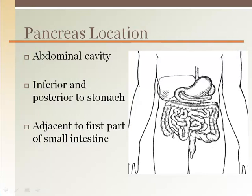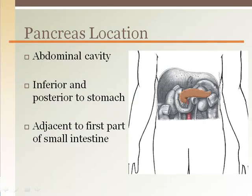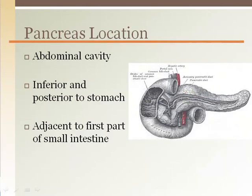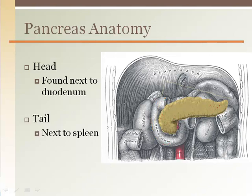The pancreas is located deep inside the abdominal cavity, hidden under and behind the stomach. When the stomach is removed, you can see the long pancreas with a tapered tail and head tucked next to the first part of the small intestine. This location allows it to easily secrete digestive enzymes into this part of the intestine. The pancreas has a head located near the arch of the duodenum, or first part of the small intestine, and tapers down to the tail located by the spleen.